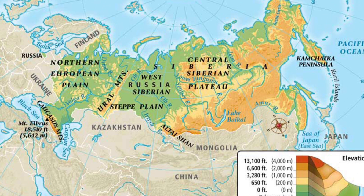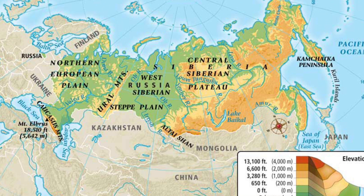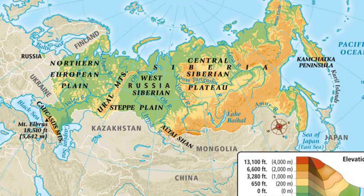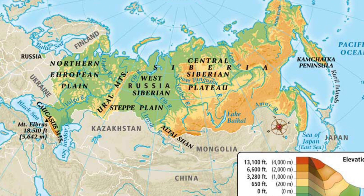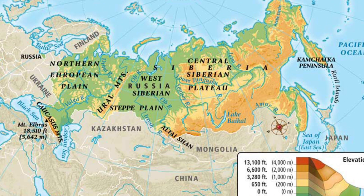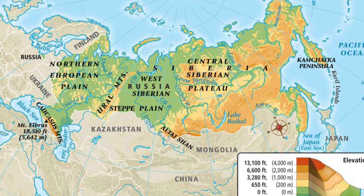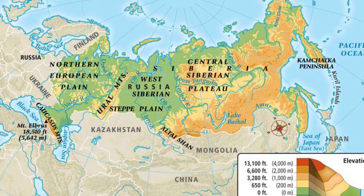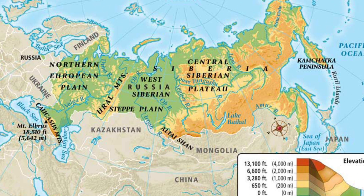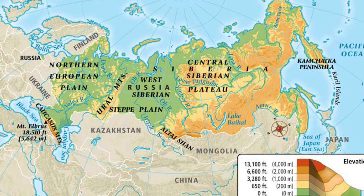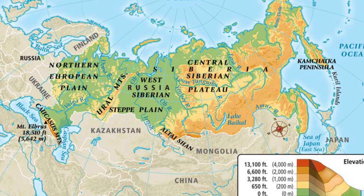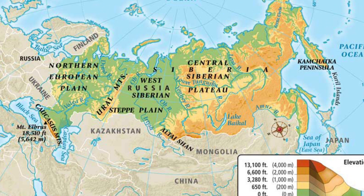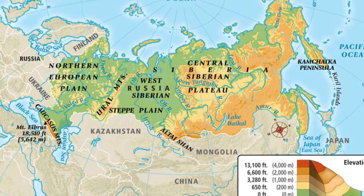Number two: plains. The North European Plain is the western side of Russia. This is the warmest region and the best region for farming and agriculture in all of Russia. This is European Russia, because it's west of the Ural Mountains.